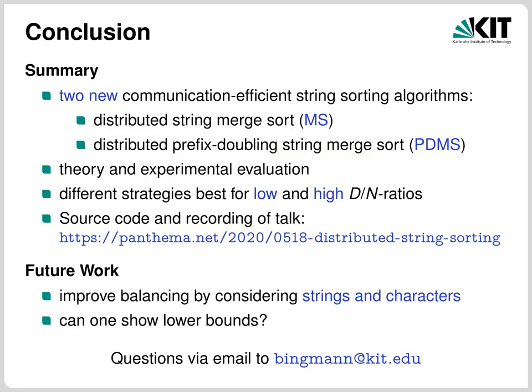This brings us to the summary. We presented two new communication-efficient distributed sorting algorithms for strings. The first is an LCP-improved distributed string merge sort called MS. The second is a distributed prefix doubling string merge sort called PDMS, which uses bloom filters to detect an approximate distinguishing prefix and communicate only that. The paper contains a lot more on the theory behind the algorithms and the experiments. We learned that there appear to be different strategies one wants to take depending on the D-to-N ratio, but choosing the right one a priori is difficult. For future work one can consider how to better balance work by looking at both strings and characters and attempting to estimate the work needed to sort or merge them, and whether one can show some lower bounds for this problem.